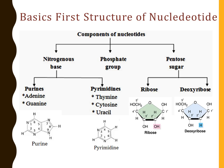Purine is a heterocyclic ring of 9 atoms of carbon and nitrogen, whereas the skeleton of pyrimidine is a heterocyclic ring of 6 carbon and nitrogen atoms. Some modifications occur in these rings to form various types of bases. There are two types of purines — adenine and guanine — and three types of pyrimidines — thymine, cytosine, and uracil — seen in these nucleic acids.